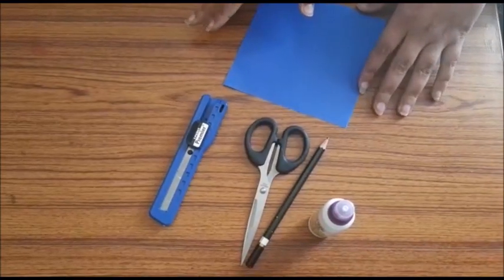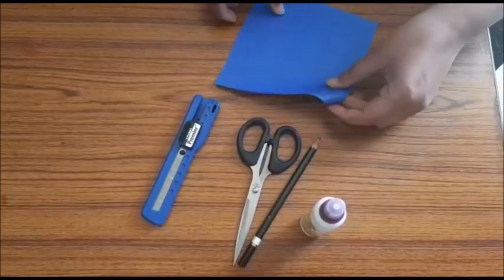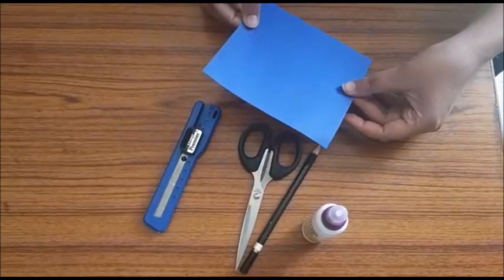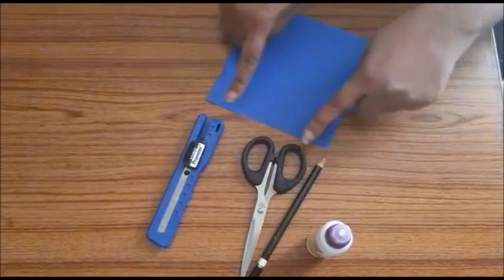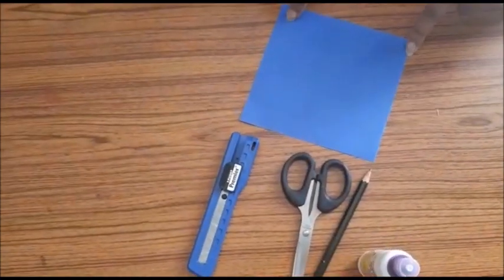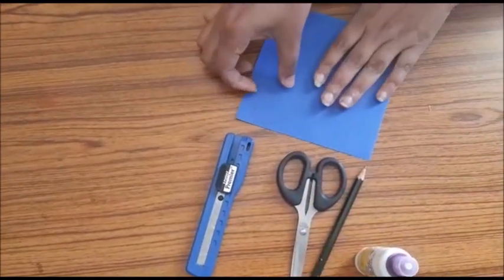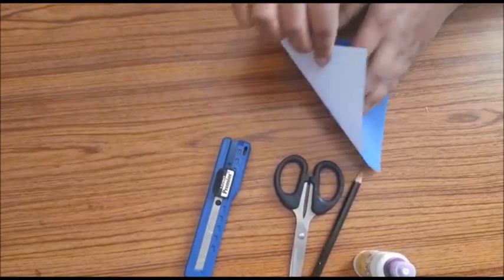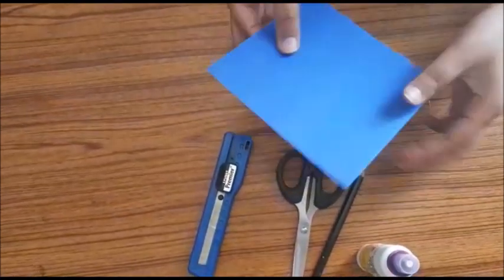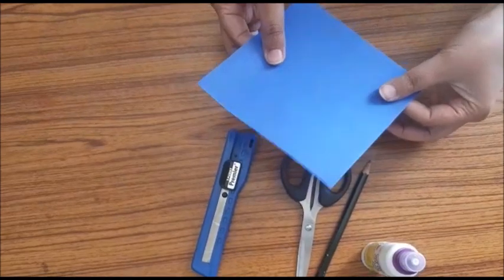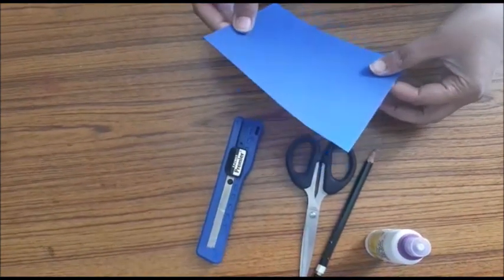For making this bookmark what we are going to do is we need one origami sheet. I need one square of it. Now this origami sheet is not colored on both sides. As you can see, one side is white and the other is blue.